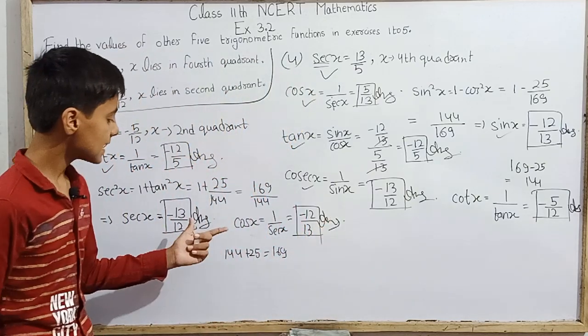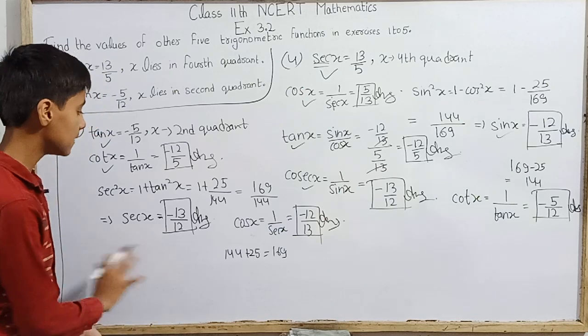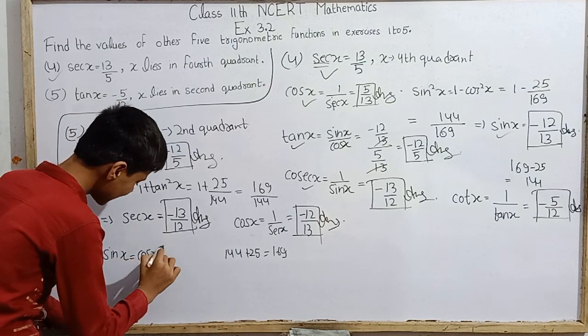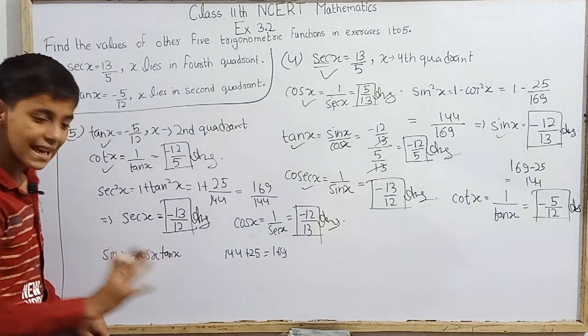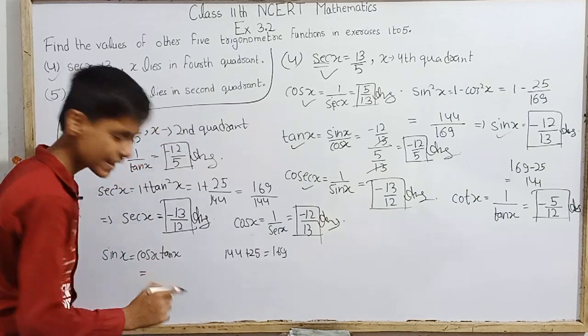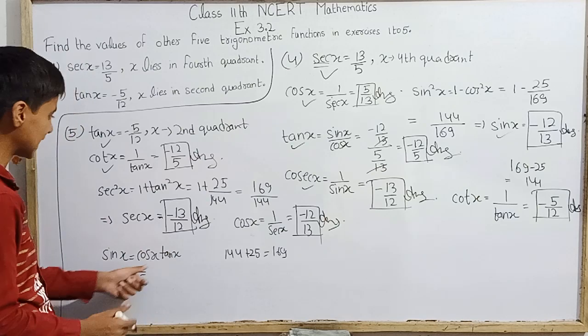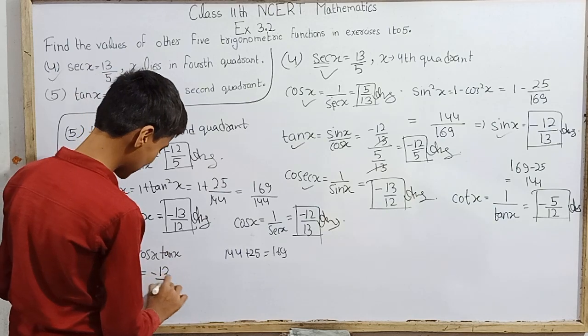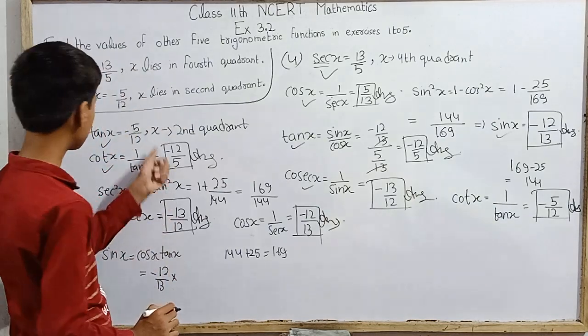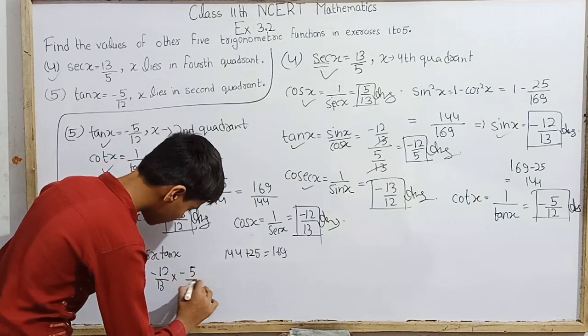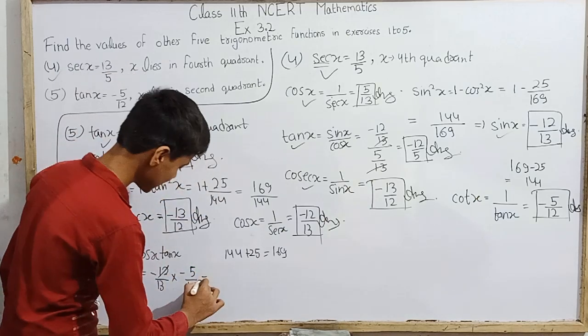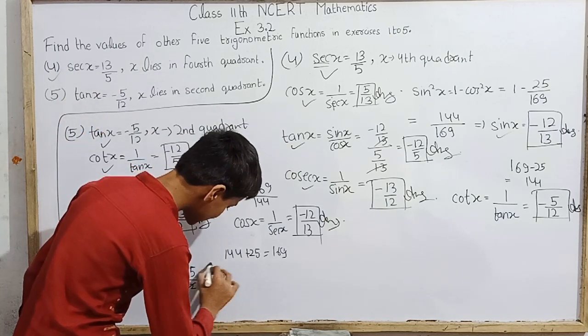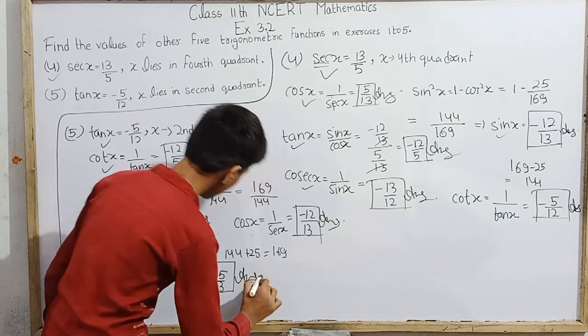We can write sin squared x equals 1 minus cos squared x, but there's no requirement for that. Instead, we use sin x equals cos x times tan x, since tan x is sin x over cos x. I find this multiplication much easier. So sin x equals minus 12 over 13 multiplied by minus 5 over 12. The negatives cancel and the 12s cancel, giving us positive 5 over 13.